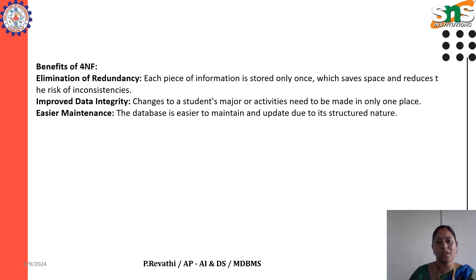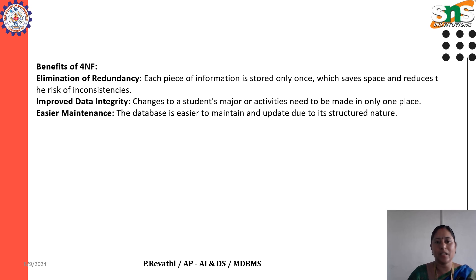Benefits of 4th Normal Form: Elimination of redundancy — each piece of information is stored only once, which saves space and reduces the risk of inconsistencies. Improved data integrity — changes to a student's major or activities need to be made in only one place. Easier maintenance — the database is easier to maintain and update due to its structured nature.